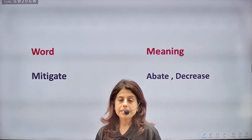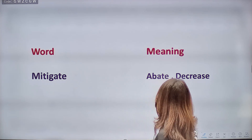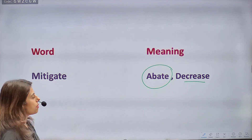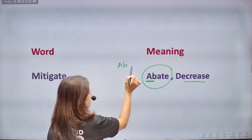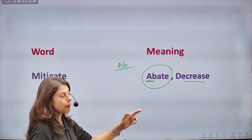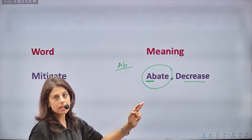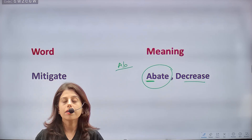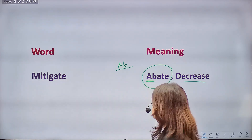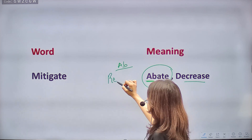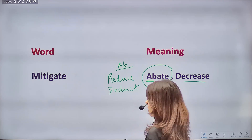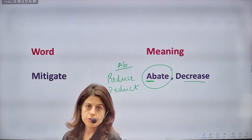Next word is MITIGATE, which means to decrease or reduce. Abate is a very good synonym — it also has the 'ab' root word meaning to decrease. So mitigate means to make something less. Other synonyms: reduce, deduct. You can make your own list of synonyms and share with me for practice.